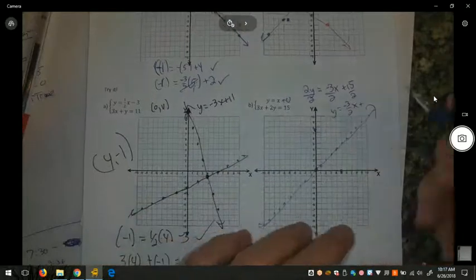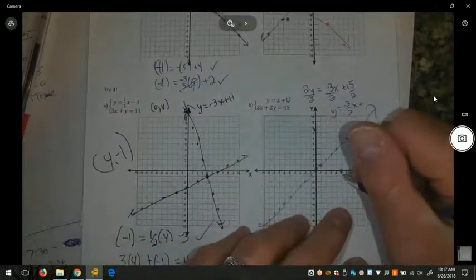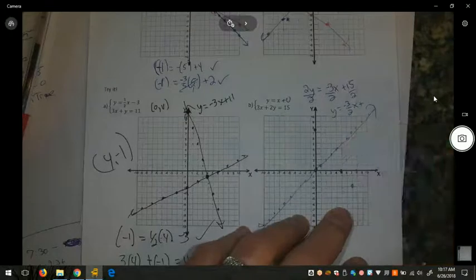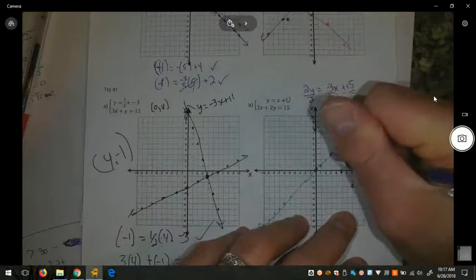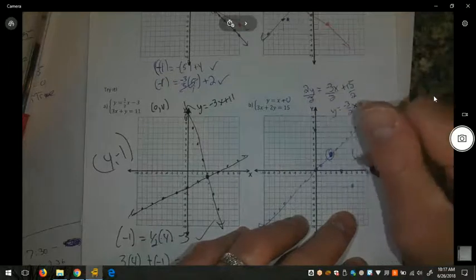Y equals negative 3 halves x. That's still difficult. But we have this point down here, the x-intercept of 5. So if I still have the correct slope, negative 3 halves x, then I can go down 1, 2, 3 and over 2. Or I can reverse that going up 1, 2, 3 and back 2. And there's our intersection point right there at 3, 3.